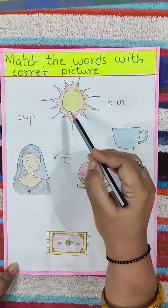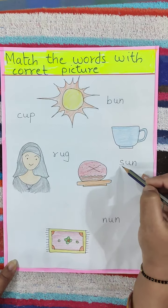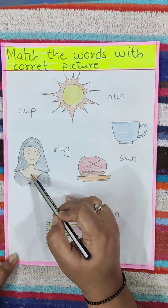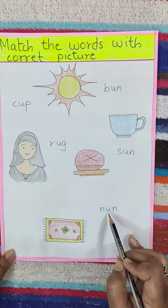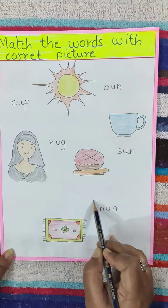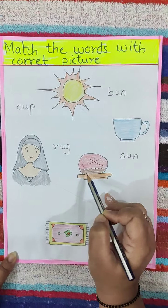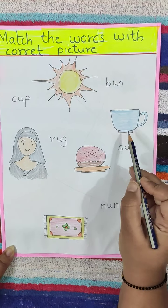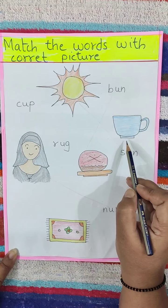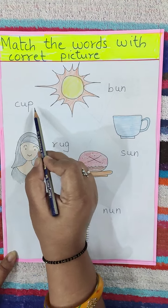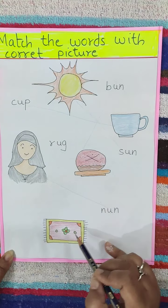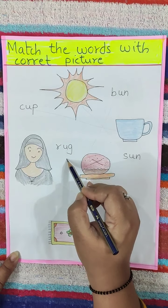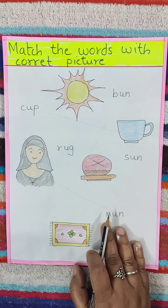So, sun — can you find where is the spelling of sun? Yes. S, U, N — sun. So we will match this. Now here is nun. What is the spelling of nun? N, U, N — nun. So we will match this. Now this is bun. B, U, N — bun. So we will match this. Now this is cup. C, U, P — cup. So we will match this. Now this is rug. R, U, G — rug. Okay? Like this, you have to do the worksheet.